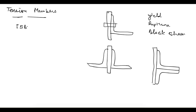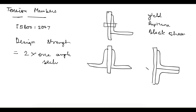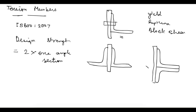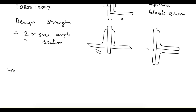IS 800:2007 states that the design strength in case of two angle sections connected on the same face or on the opposite face is equal to two times the design strength of one angle section. You don't have to do anything further — just multiply what we found for one angle section by two. This is different from the working stress method, where using two angle sections gave a value greater than twice the design strength of one angle section.